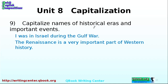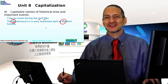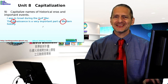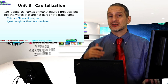Historical eras are a little harder to remember. For example: 'I was in Israel during the Gulf War' — that's the name of a special time, so it gets capitalized. 'The Renaissance is a very important part of Western history' — Renaissance is a time period and Western history is a region, so they get capitalized. You might want to check the dictionary because sometimes it's hard to know whether something is an era or a region.